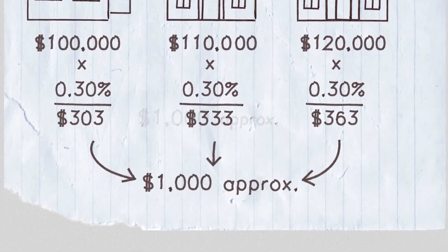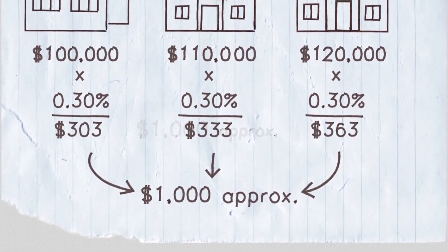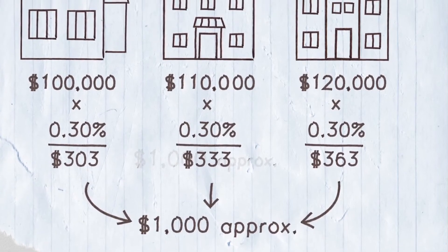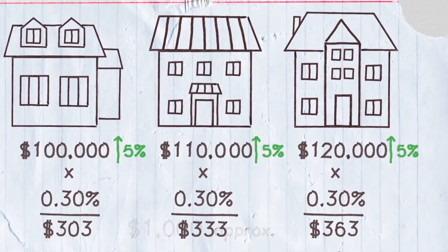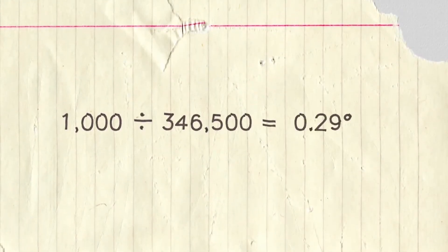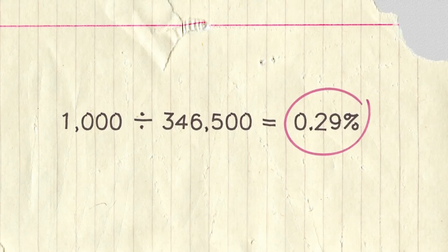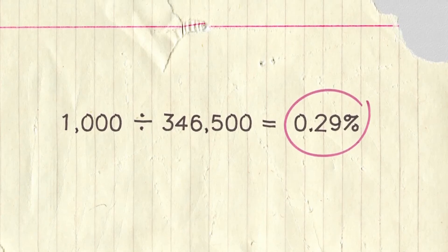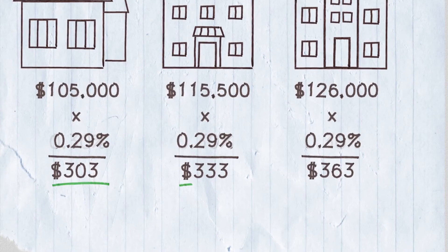This tax rate is applied to all the houses to get enough money to pay for all of the services, so each homeowner pays according to how much their house is worth. Every four years, the houses are reassessed. Let's say all three properties have gone up equally in value. If we go back to our calculation, the total cost of services hasn't changed, but the total property value has increased. When this happens, there will be a decrease in the tax rate. When we apply that new rate on all the homes, everyone still pays the same.